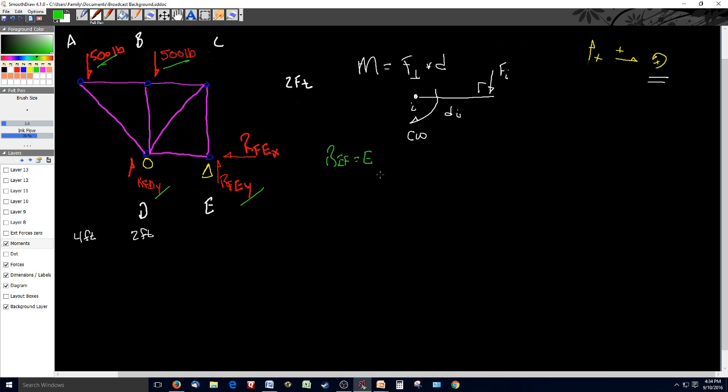meaning that's our pivot point. So now, the summation of our moments for the overall body, or M sub I, has to equal zero. And that equals the moment at A plus the moment at B plus the moment at D plus the moment at E.